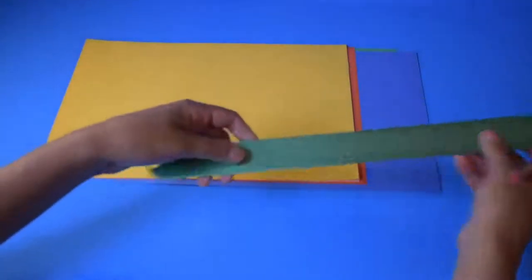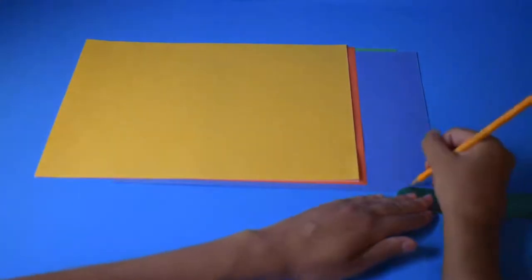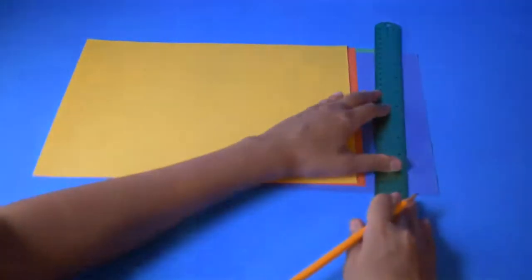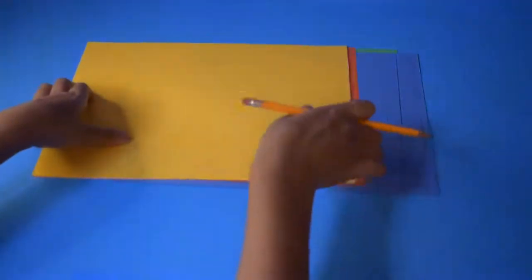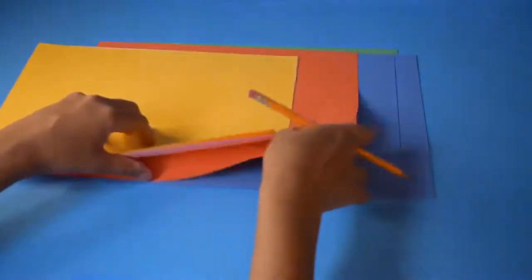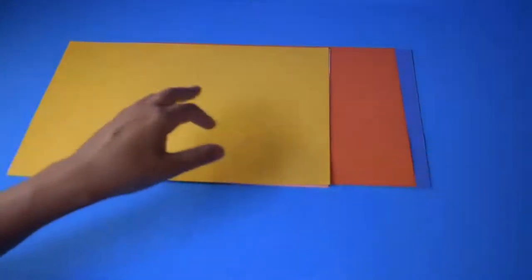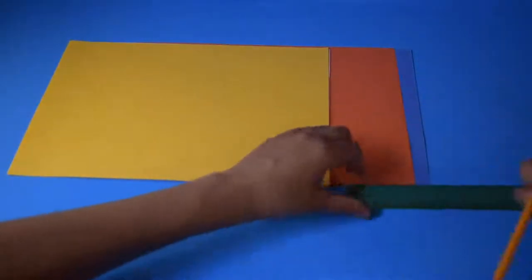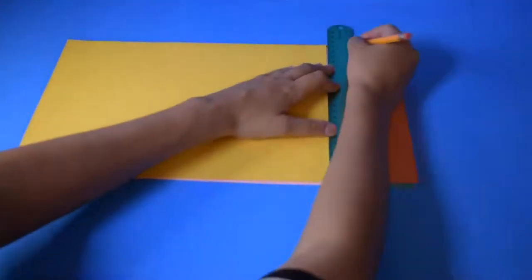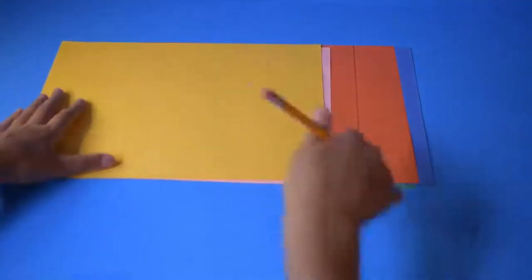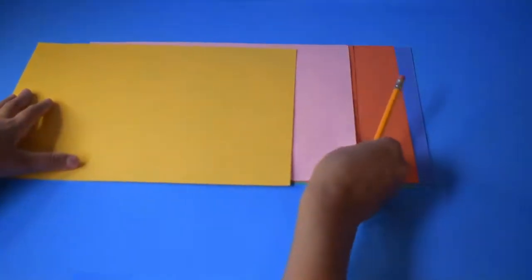On the second sheet of paper, measure one inch away from the width or the short edge and create a line like so. On the third sheet of paper, measure two inches from the edge. Continue measuring away from the edge and add an extra inch for each sheet of paper.